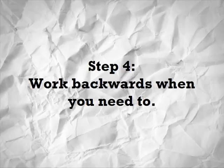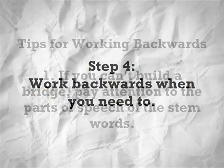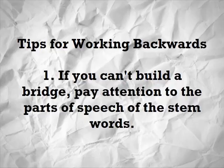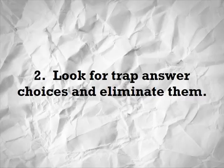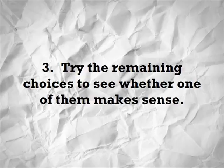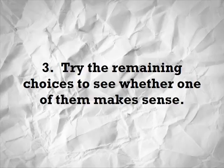Step 4: Work backwards when you need to. What happens if you can't build a bridge between the stem terms, don't know some of the stem terms, or understand only one half of the analogy? Tips for working backwards: First, if you can't build a bridge, pay attention to the parts of speech of the stem words and try different ways to build a bridge. Consider secondary meanings of words — for example, 'cow' can function as a verb meaning to intimidate, and 'low' can function as a verb meaning to moo. Second, look for trap answer choices and eliminate them. Third, try the remaining choices to see whether one makes sense. Fourth, if you are still stuck, just guess.